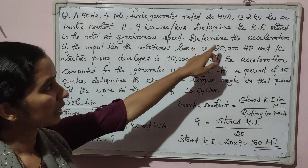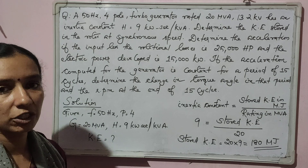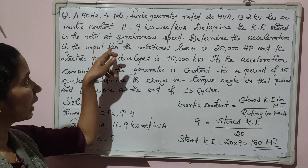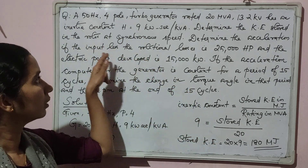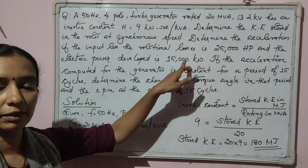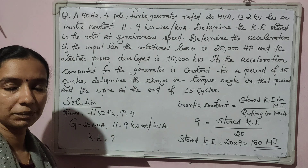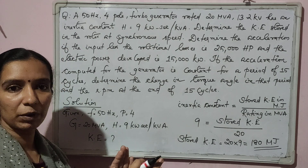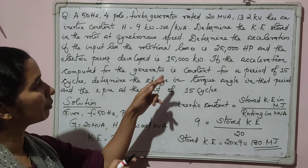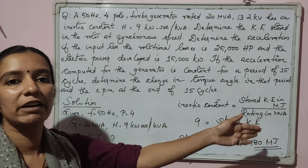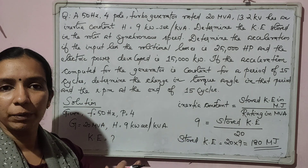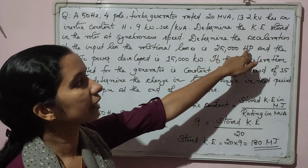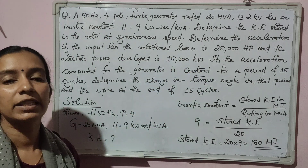Now determine the acceleration. We have to determine the acceleration of the machine if the input less the rotational losses is 25,000 hp. Input less the rotational losses means input minus rotational losses. After subtracting the rotational losses from the input, the remaining mechanical shaft power is 25,000 hp. From the mechanical power input, after subtracting the rotational losses, the remaining power available at the shaft is 25,000 hp, and the electrical power output is 15,000 kilowatt.